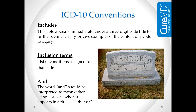Here are some other conventions. The word 'includes' in the tabular list further defines, clarifies, or gives examples of the content of a code category. For example, under the code for asthma — I believe it's J45 — the includes note says all codes in this category include allergic asthma, so you don't need to search for a specific code. You can also see inclusion terms, which list other conditions assigned to that code. If what your patient has matches a term in the inclusion list, that code works too.